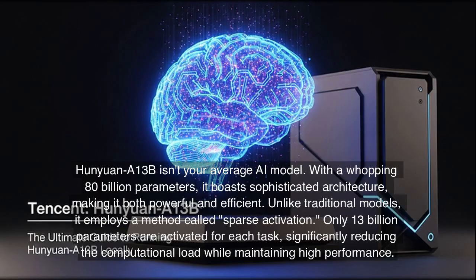Hanyuan A13B isn't your average AI model. With a whopping 80 billion parameters, it boasts sophisticated architecture, making it both powerful and efficient. Unlike traditional models, it employs a method called sparse activation — only 13 billion parameters are activated for each task, significantly reducing the computational load while maintaining high performance.